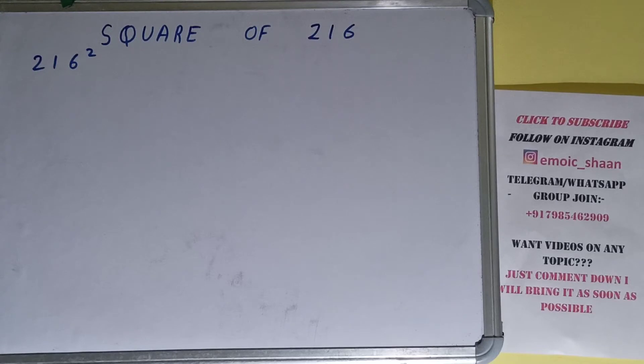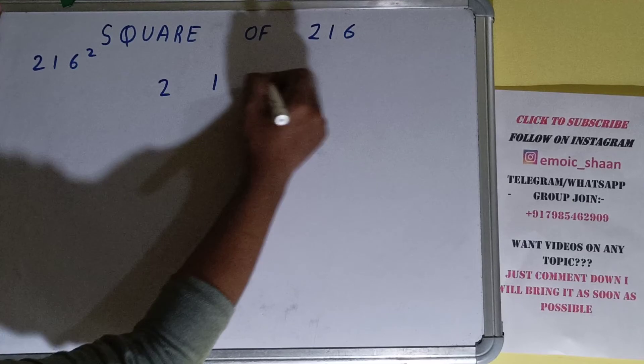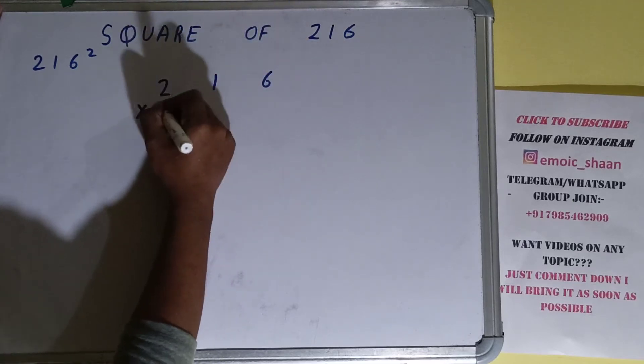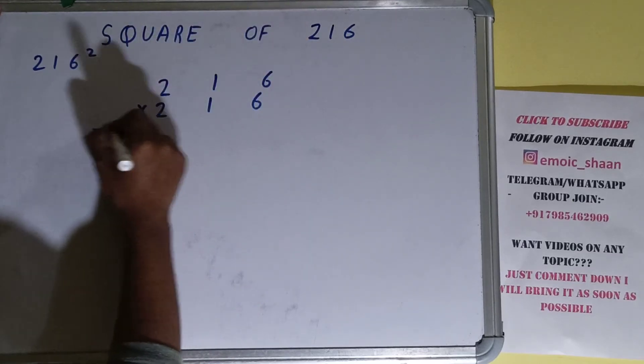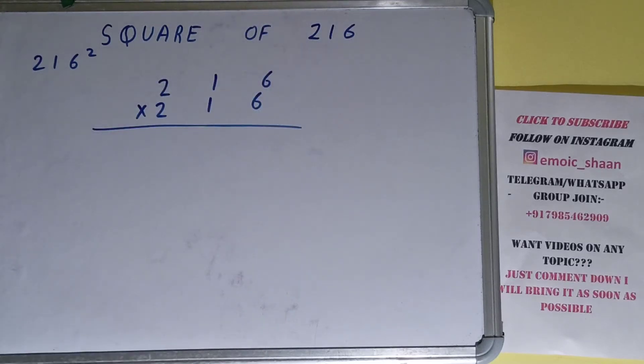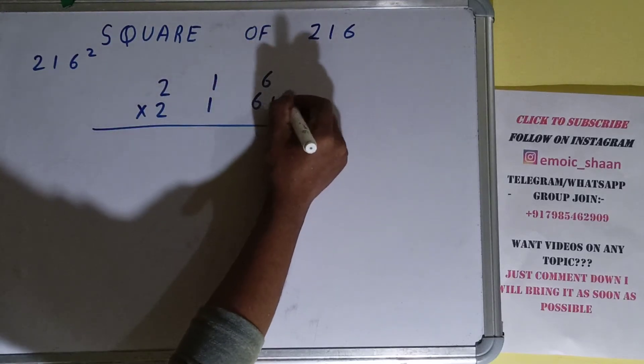These have the same meaning - we need to find the square of 216. Now moving on to the solution, square basically means multiplying the number by itself. The number over here is 216, and to find its square we need to multiply it by itself, that is 216, and do the normal multiplication.